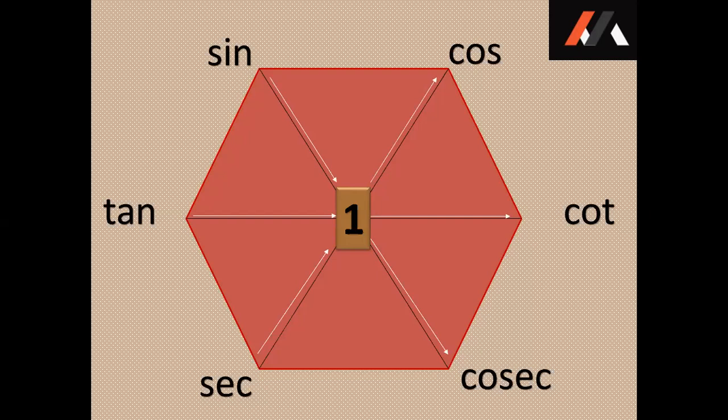So if we multiply sine and cosec, we will get 1. Tan and cot will also give 1. And when we multiply sec and cos, we will also get 1. Sine is equal to 1 by cosec; cosec is equal to 1 by sine. Tan is equal to 1 by cot; cot is equal to 1 by tan. Sec is equal to 1 by cos; cos is equal to 1 by sec. These are the reciprocals of trigonometric functions.